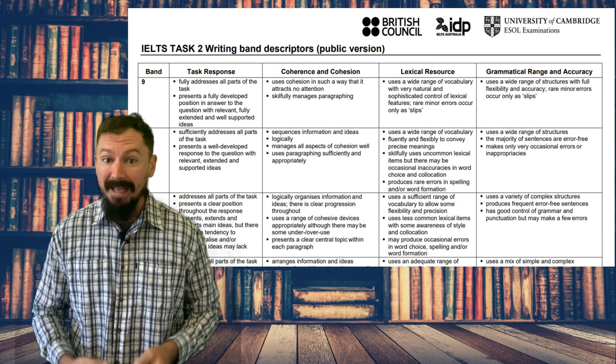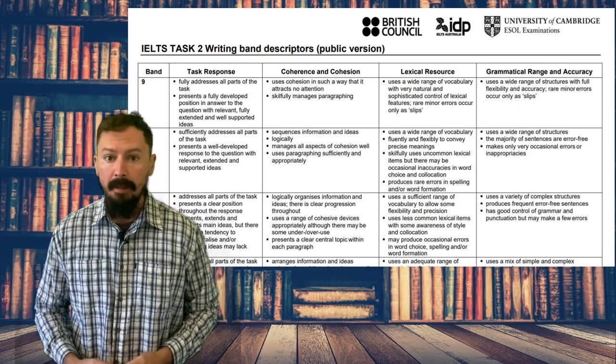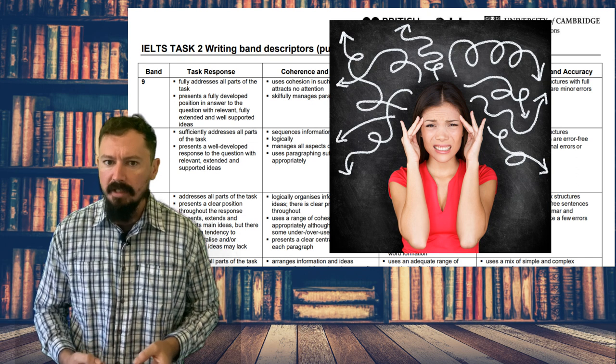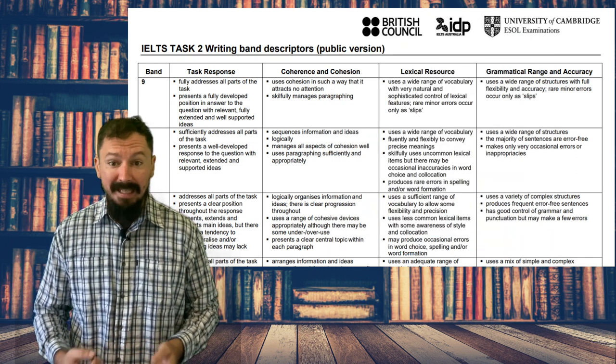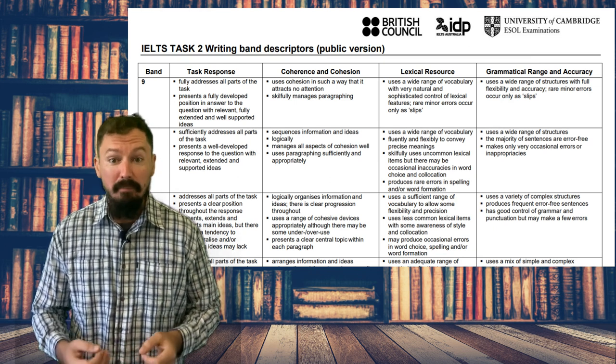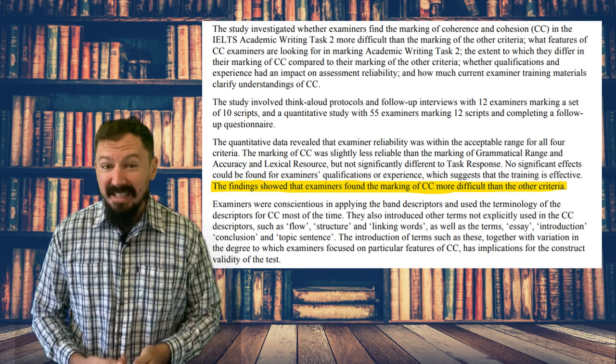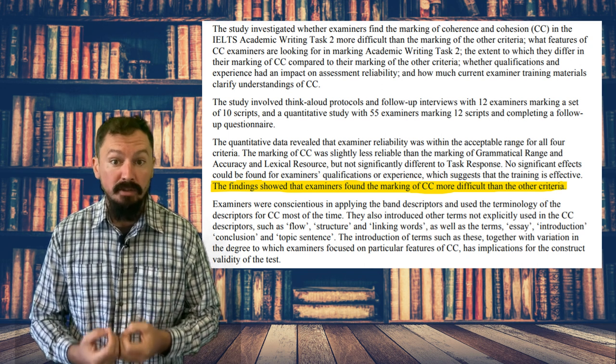A high score in coherence and cohesion requires having your ideas put logically into paragraphs and having your sentences flow together in an intuitive way. It's all about the organization of your ideas. Now we have a general idea of what coherence and cohesion means — let's look at the IELTS band descriptors to get a better understanding. These are freely available on the IELTS and British Council websites, but actually they're quite difficult to understand and this causes various problems. Many candidates and even IELTS tutors misunderstand the words used here.